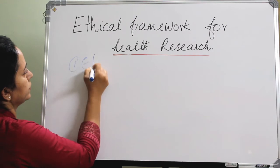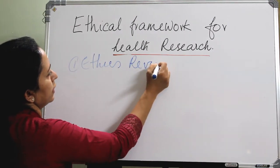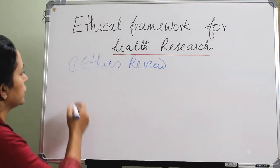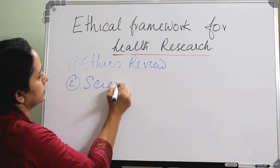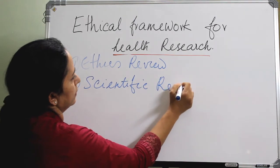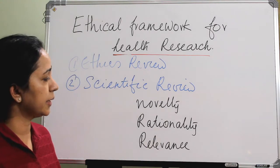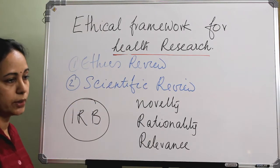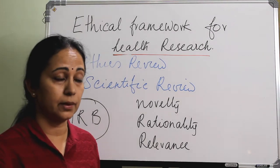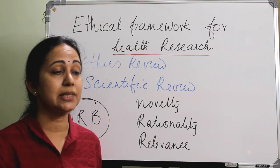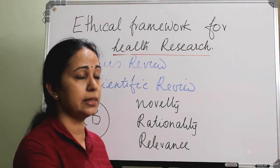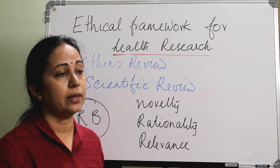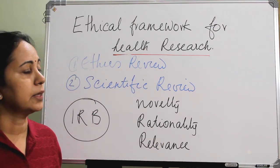There are three types of reviews: ethics review, scientific review, and regulatory review. The scientific review looks for the novelty, rationality, and relevance of the study, and is usually conducted by an institutional review board. They examine the background, relevance, objectives, study sample design, methodology, and whether these are in correlation with the primary objectives and title. They also assess feasibility, inclusion and exclusion criteria, sample size adequacy, study population, study setting, data collection methods, and the plan of analysis.